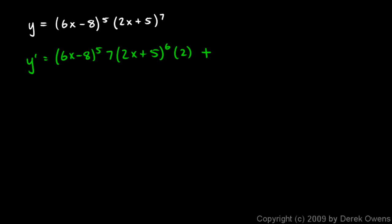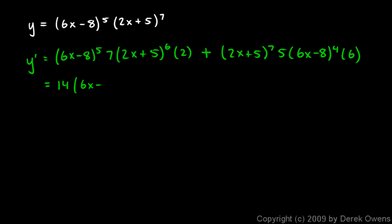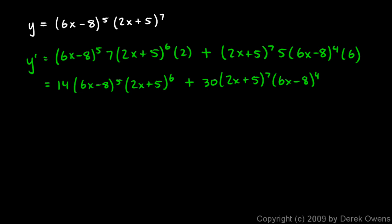So that's the first times the derivative of the second. Now we need the second times the derivative of the first. The second function is (2x plus 5) to the seventh, times the derivative of the first — using the power rule: 5 times (6x minus 8) to the fourth times 6. Combining coefficients: 7 times 2 gives 14, and 5 times 6 gives 30. So we rewrite as 14 times (6x minus 8) to the fifth times (2x plus 5) to the sixth, plus 30 times (2x plus 5) to the seventh times (6x minus 8) to the fourth.